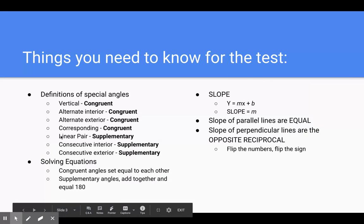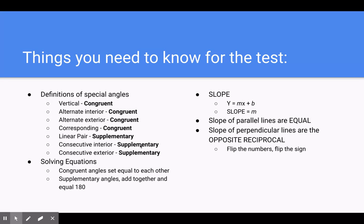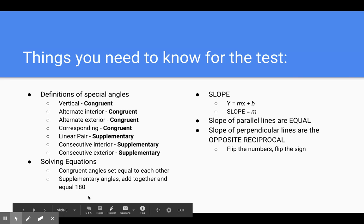Okay, things you need to know for the test. Definitions of the special angle pairs — remember vertical and linear pairs, those are reviewed from chapter 1. The new angle relationships from this chapter are alternate interior, alternate exterior, corresponding, consecutive interior, and consecutive exterior. Remember, the top four are congruent to each other — when they're congruent, you set them equal to each other in an equation. The bottom three are supplementary — you add the two angles together and set them equal to 180.